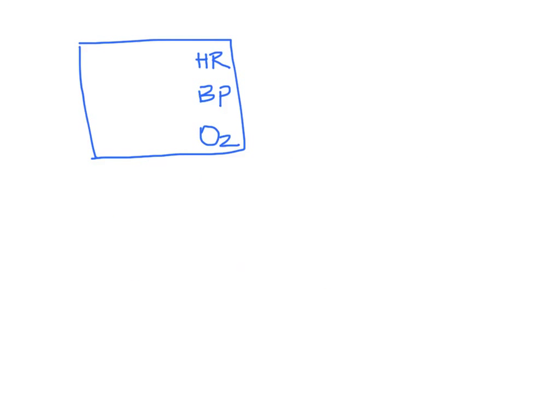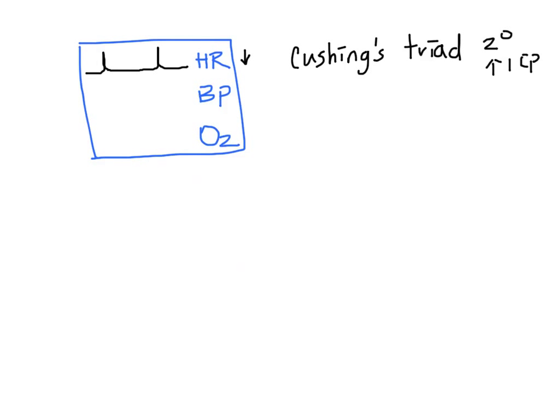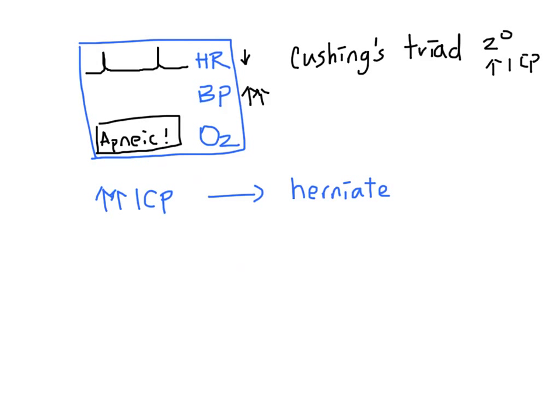While the patient is on the cardiac monitor, we want to look out for Cushing's triad. This is a physiological response to increased intracranial pressure. It consists of bradycardia, hypertension, and apnea. Cushing's triad means there is a critical increased intracranial pressure. If it is not fixed, the brain can quickly herniate. Therefore, we need to decrease the intracranial pressure. We will discuss this in the next specific treatment section.